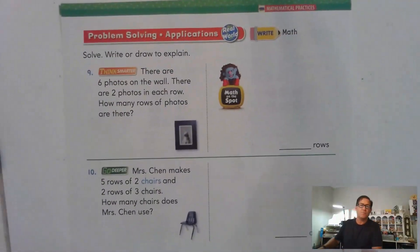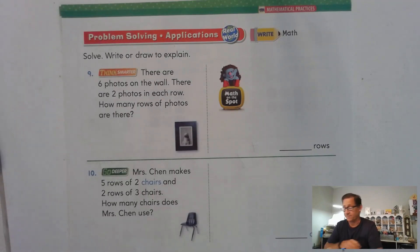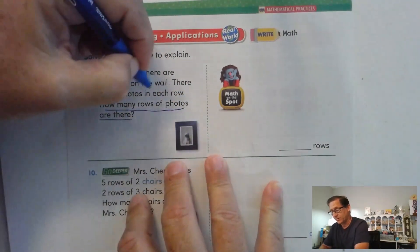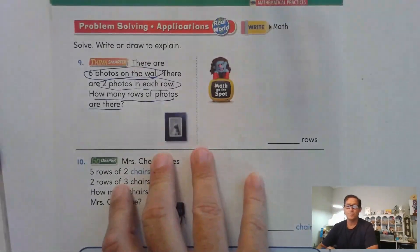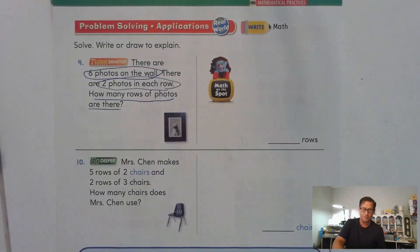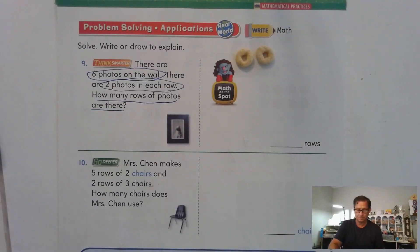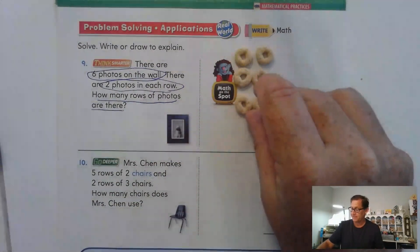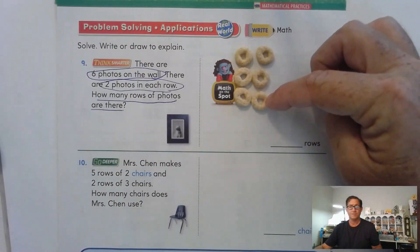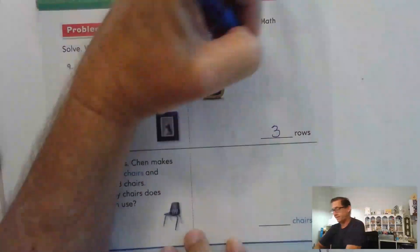Solve by writing or drawing to explain. There are six photos on the wall. There are two photos in each row. How many rows of photos are there? We know there are six total and there are going to be two in each row. We want to add two for each row until we get to six. That's two rows of two, then three rows of two — two, four, six. So there are three rows.